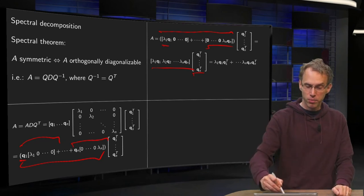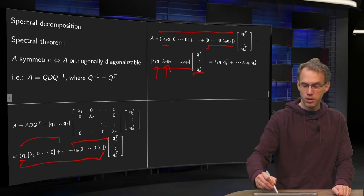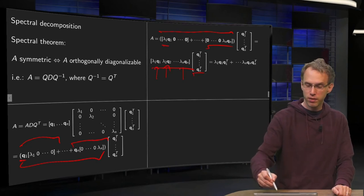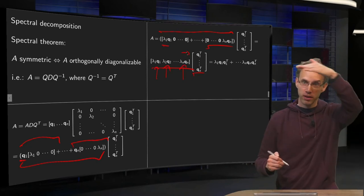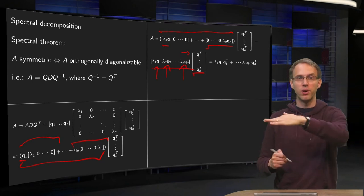So here we have columns lambda 1 Q1, lambda 2 Q2 until lambda n Qn. Here we have rows Q1, Q2, Q3 until Qn.